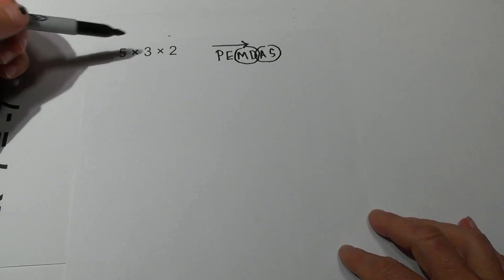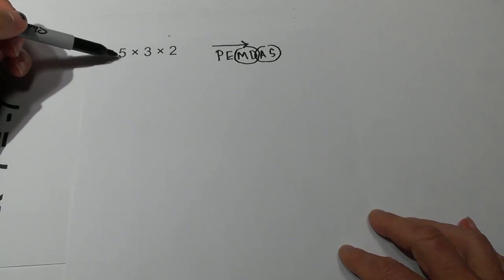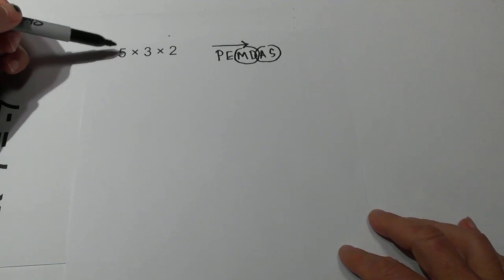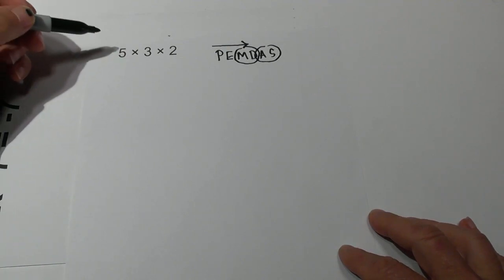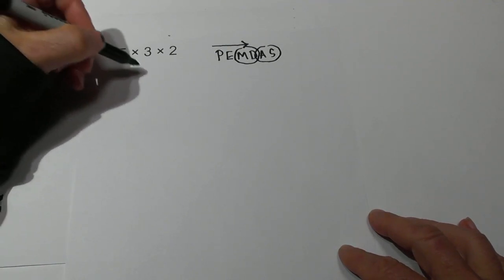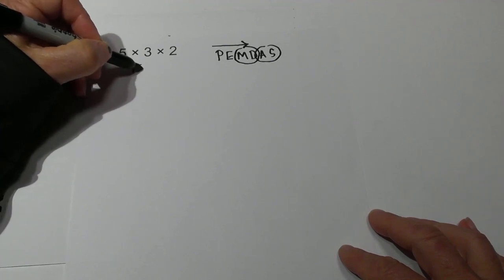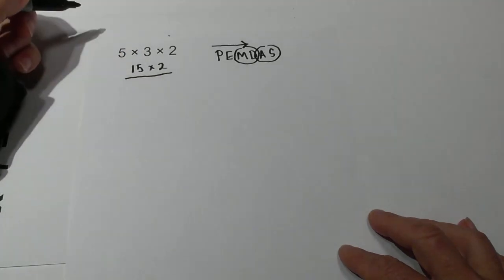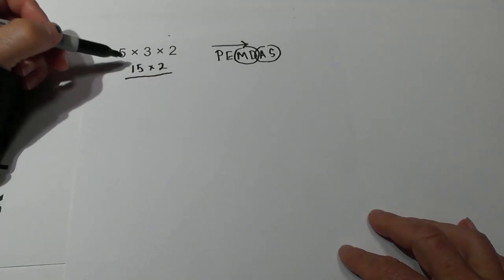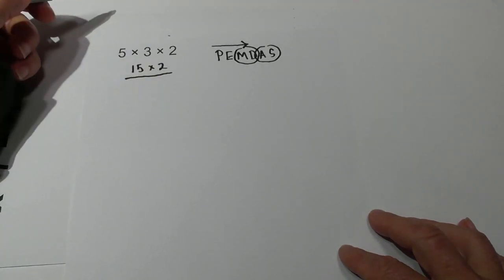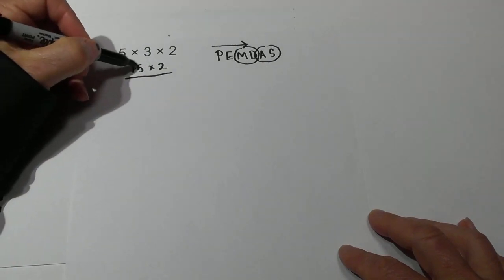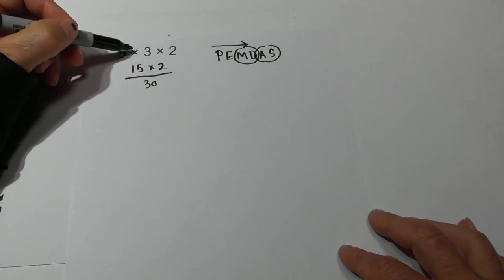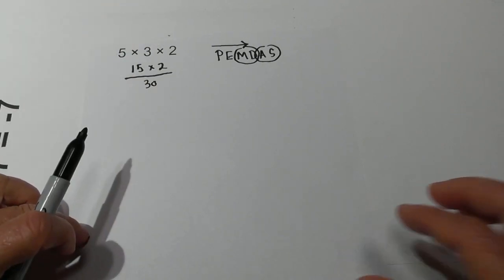Working from left to right: do we have parenthesis? No. Exponents? No. Multiplication? Yes. So we go 5 times 3 which is 15, bring the 2 down. Now 15 times 2 is 30. So 5 times 3 times 2 equals 30.